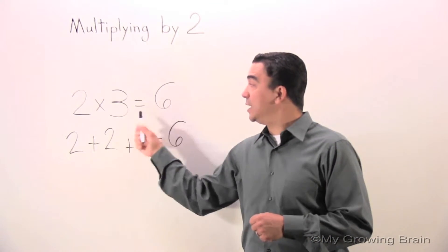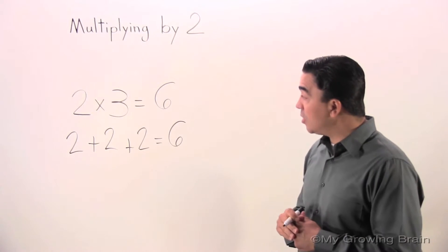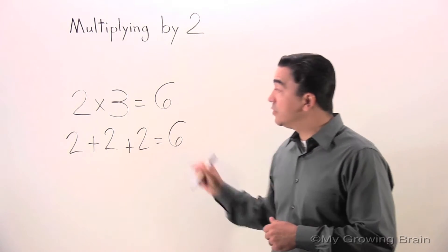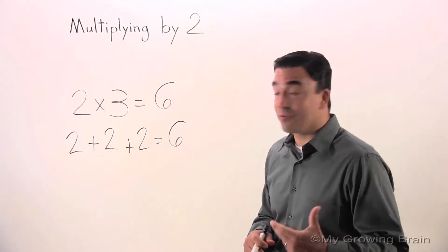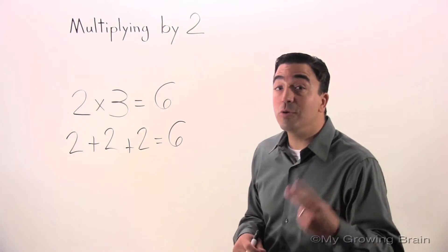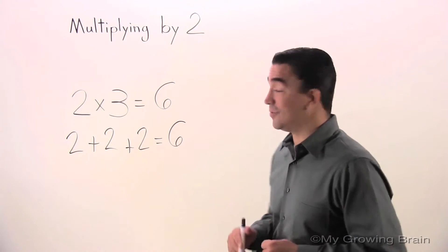Now, if we know that 2 times 3 equals 6, and we know that 3 2s equals 6, we also know that 2 3s equals 6.